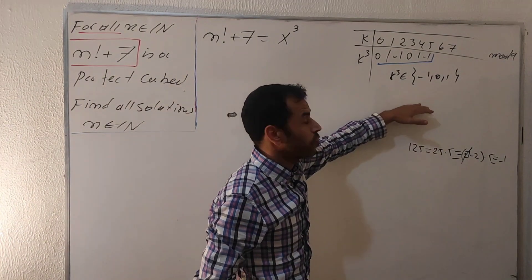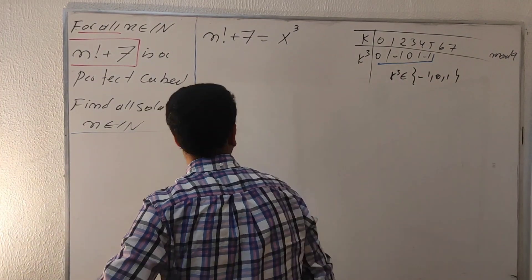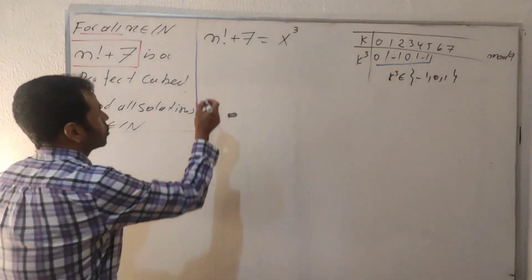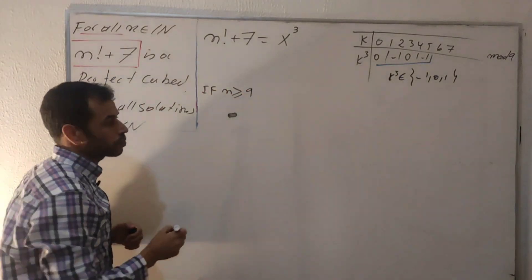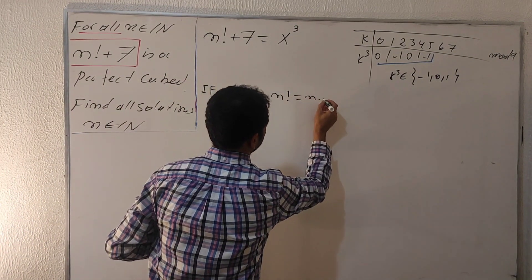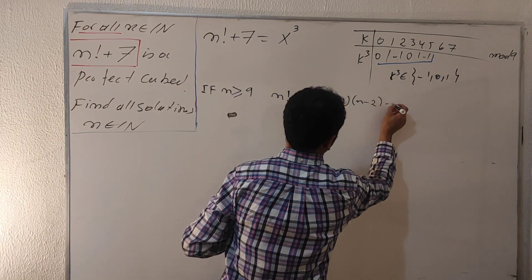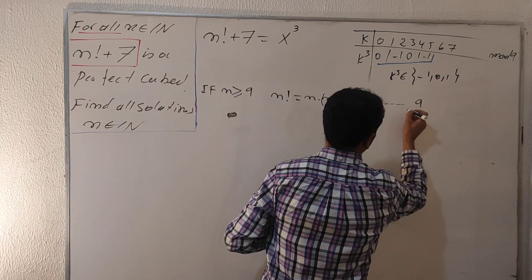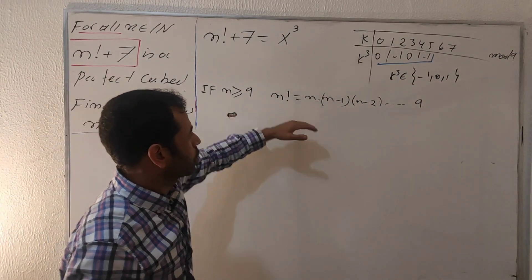Now let's take this advantage and apply it on this equation. Before we do that, let's check if n is greater or equal to nine. n factorial equals n multiplied by n minus one, minus two, all the way down to nine. If I'm trying to reduce this one to mod nine, this one is congruent to zero mod nine.